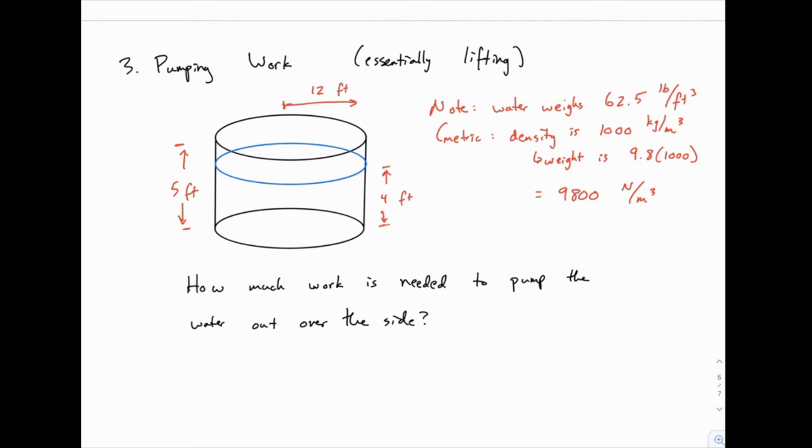In metric, if you're dealing with metric units, if you see meters for instance on the measurement, the density of water in metric units is 1,000 kilograms per cubic meter. Now notice that density and weight are not the same thing. The weight is going to be that density times the gravitational constant 9.8, so that turns out to be 9,800 newtons per cubic meter. Those two values are just constants, the 62.5 or 9,800, and you'll see those depending on which unit of measurement we're using.